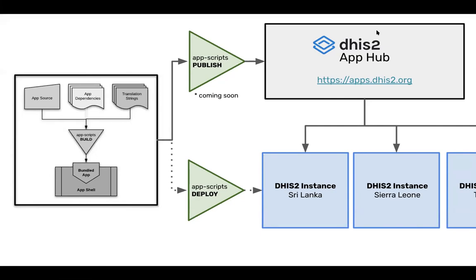The App Hub is a place where these generic applications live and can be uploaded and published by application developers, and then installed into various DHIS2 instances. Very soon, we will have a publish command that lets you also from the command line publish directly to the App Hub. We have a team of developers at DHIS2 core team and the University of Oslo who review those applications and provide feedback on security and whether they're suitably generic. So it's a very good way to get feedback on your application when you'd like to share it.